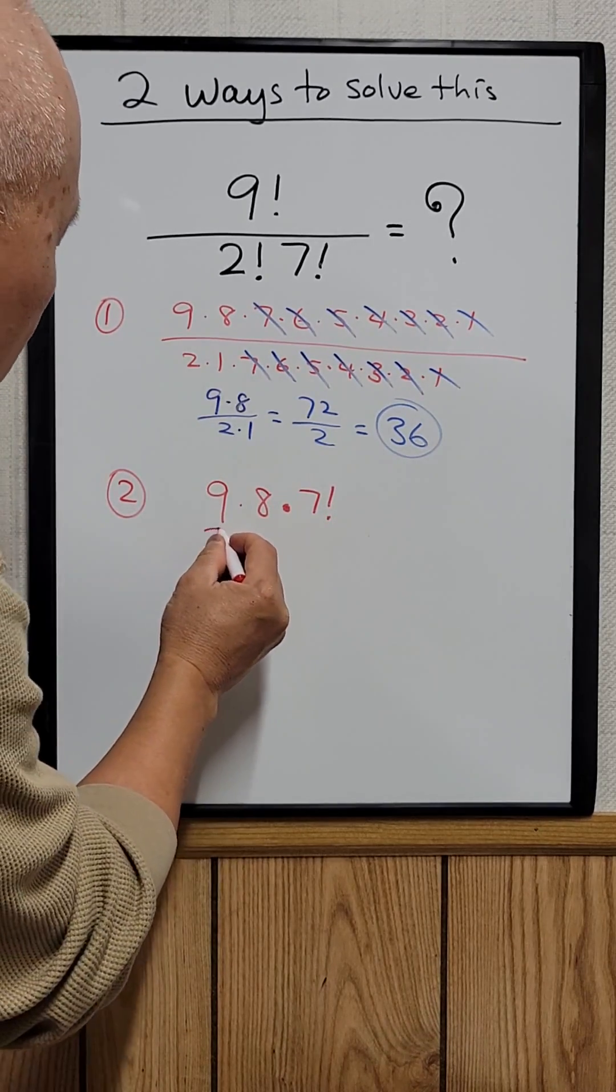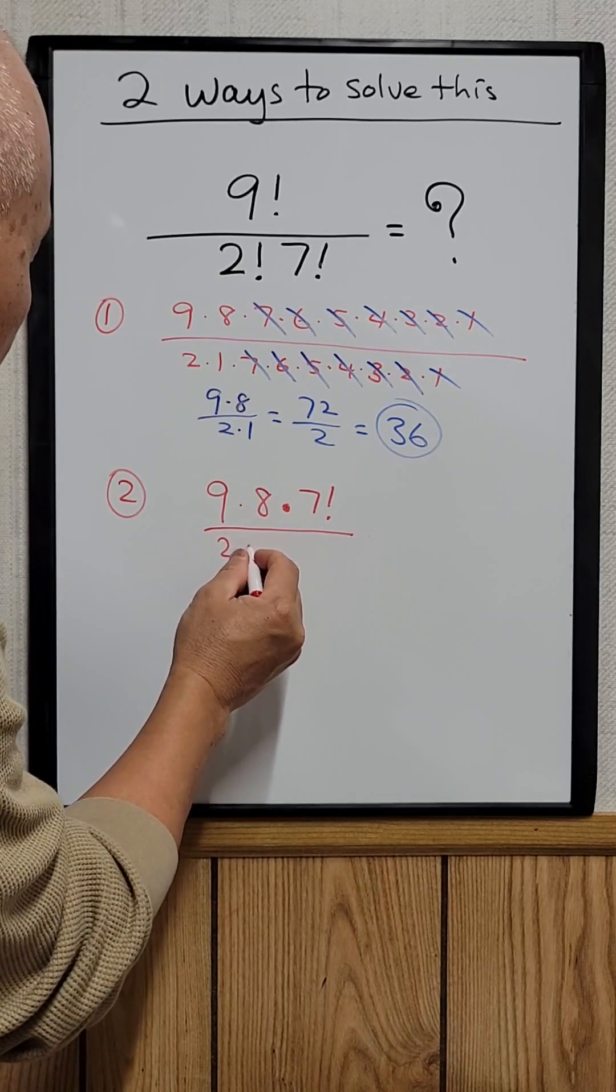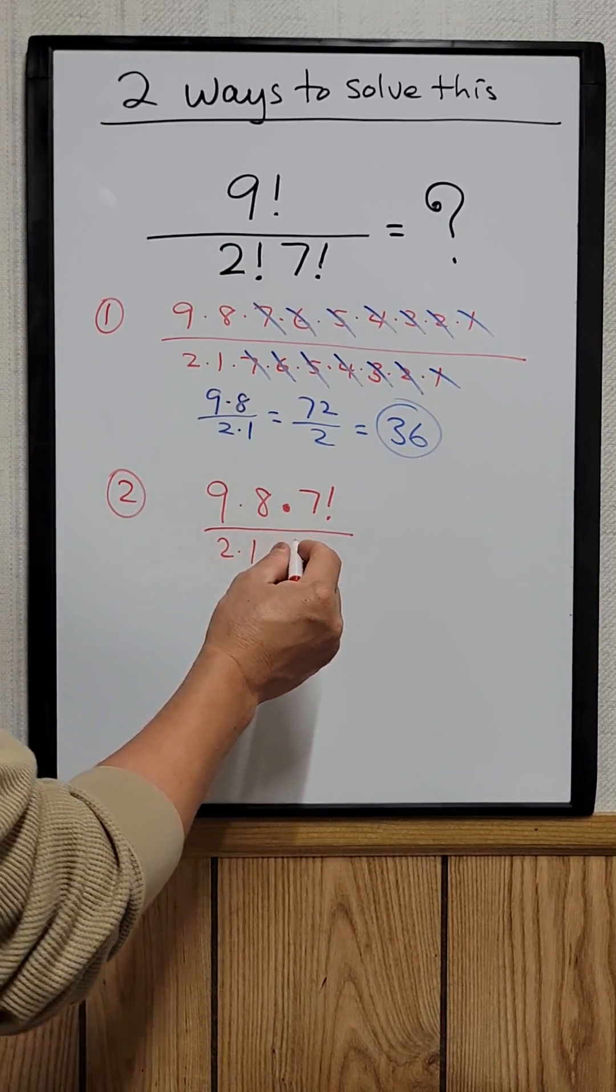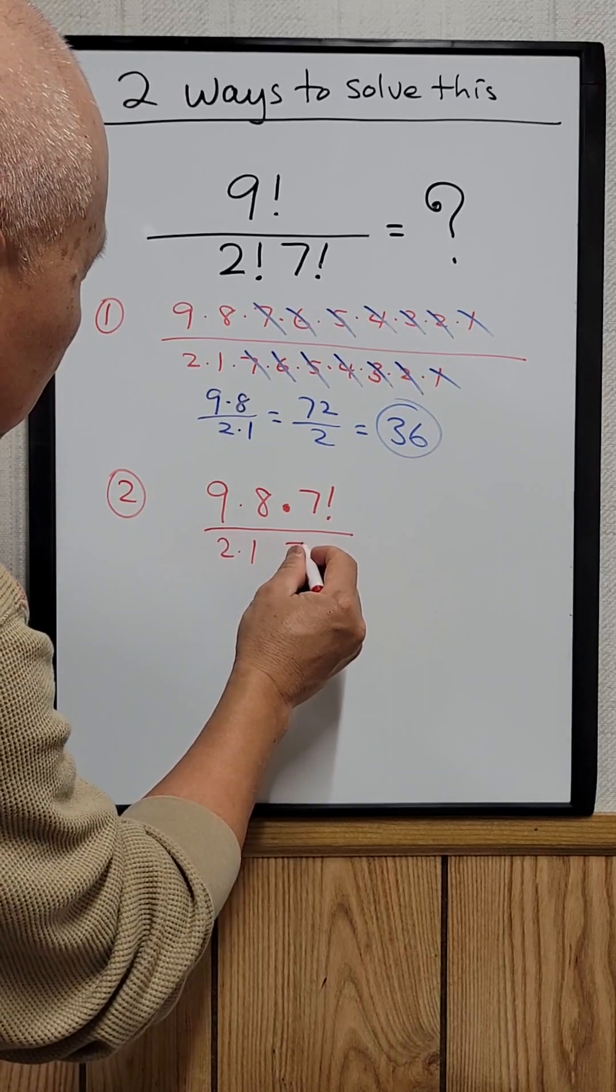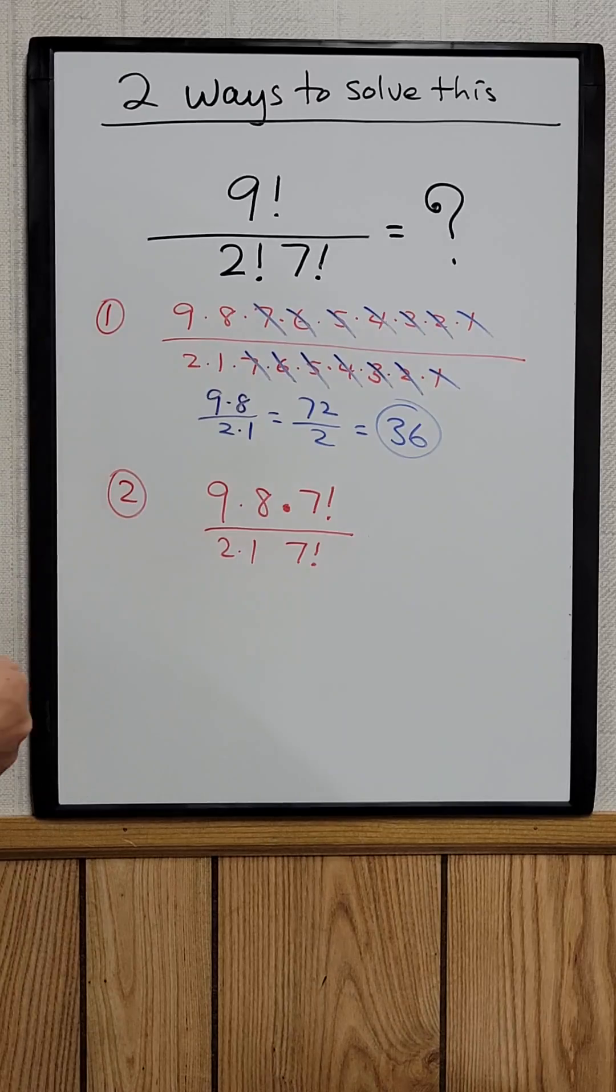So the whole thing is divided by two factorial, which is two times one, and then seven factorial. This way you can cancel out the seven factorial.